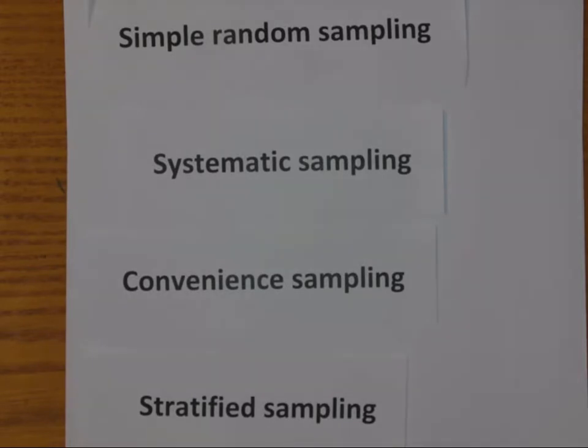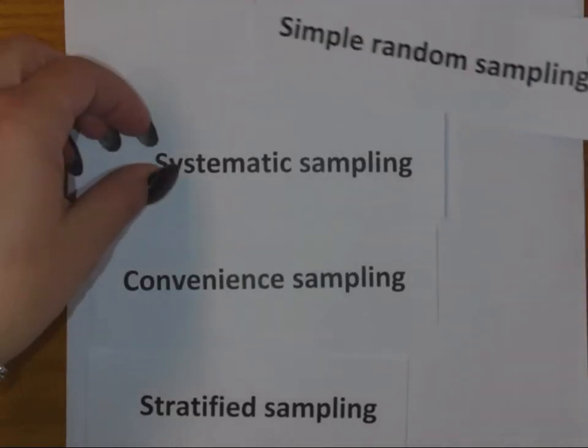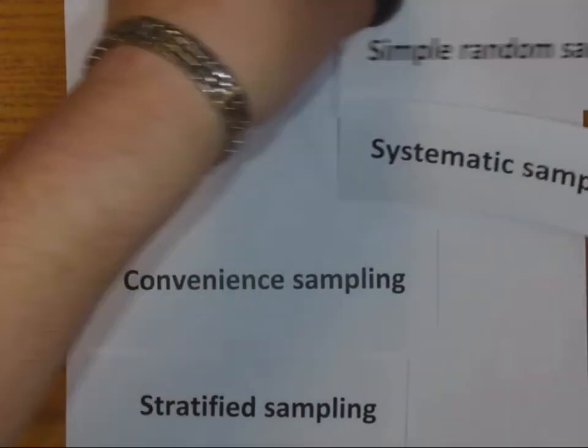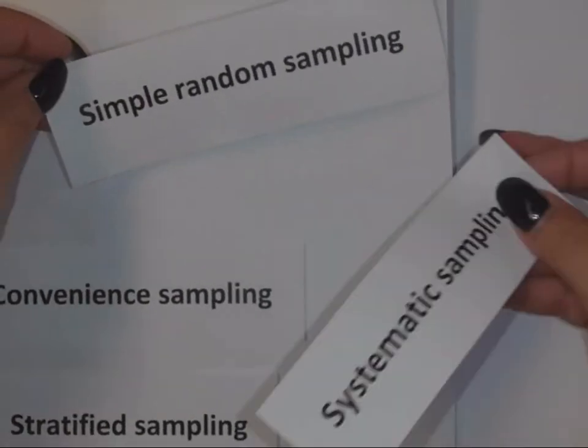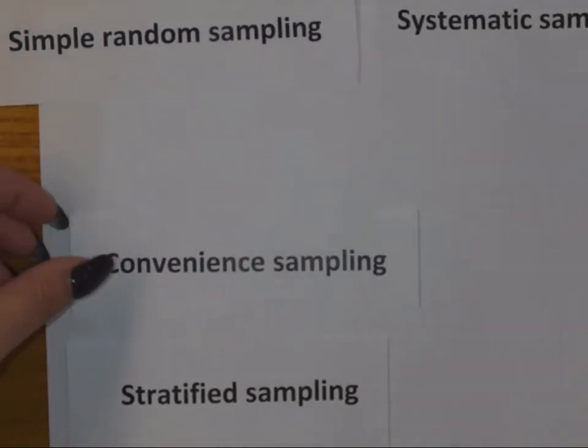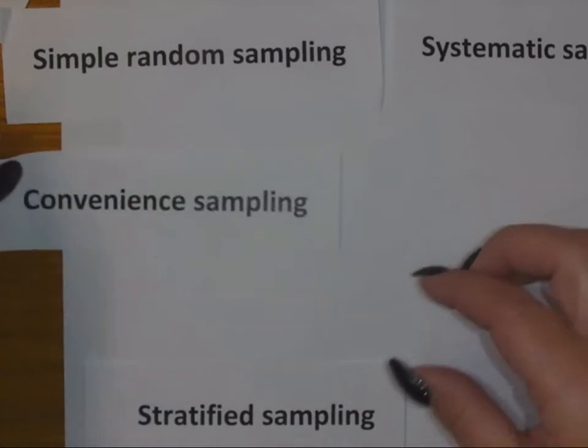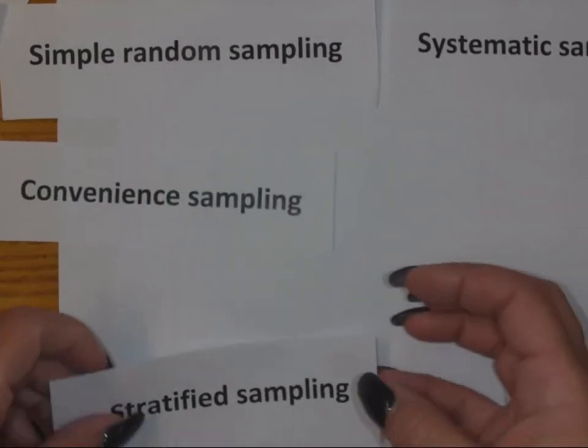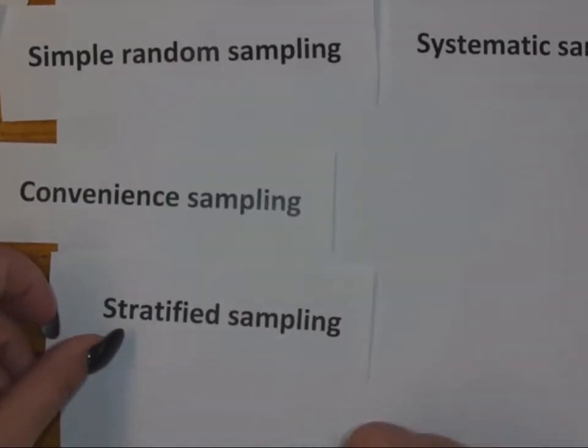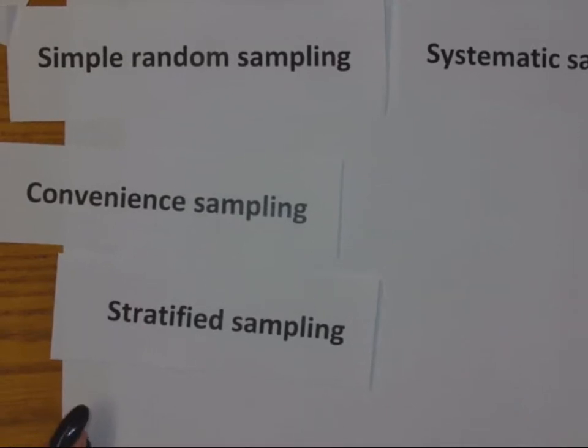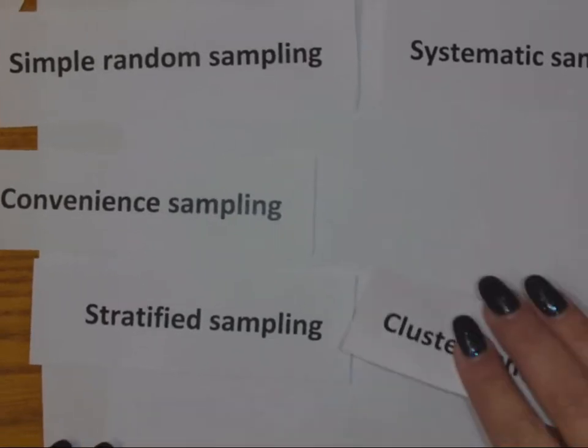You would have them laid out. We don't care about the word sampling so I'll just kind of stick them like this. I'm gonna keep my stratified and my clustering together because those are the two group ones.